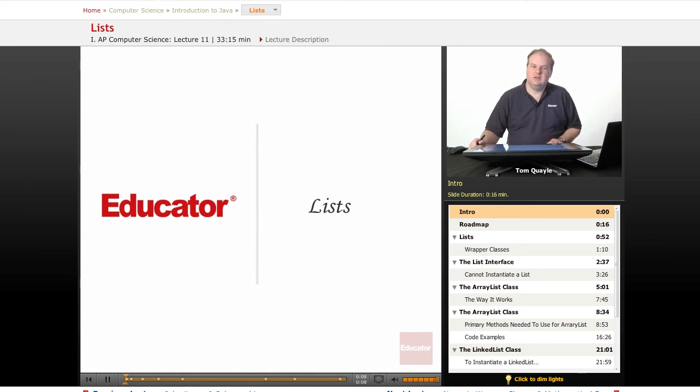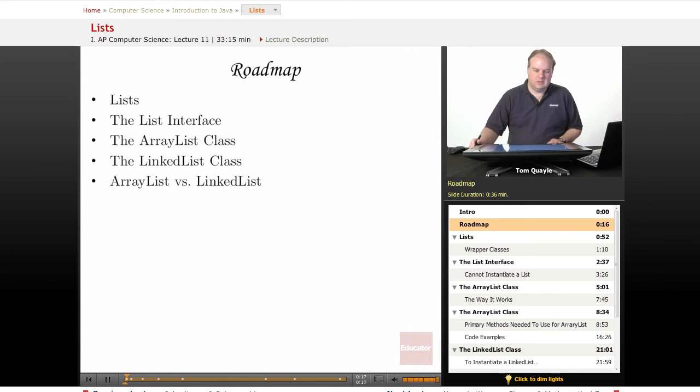Lists are a very useful and easy-to-use data structure that's provided in the Java programming language. In this lesson, we'll first talk about the concept of a list and how it works. We'll see that the list is implemented as an interface in Java, and we'll talk about what that means. Then we'll look at two implementations of the list interface.